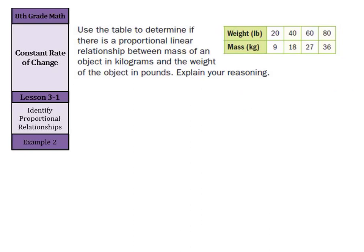We're going to use this table to determine if there is a proportional linear relationship between mass of an object in kilograms and the weight of the object in pounds. We're going to explain our reasoning. Well, the first thing we're going to look for to see is there a constant rate of change.